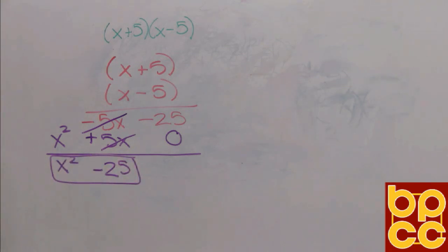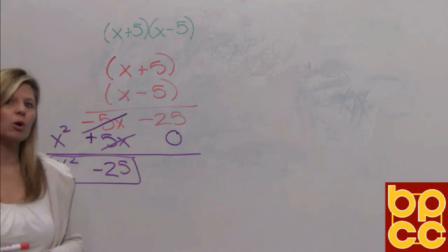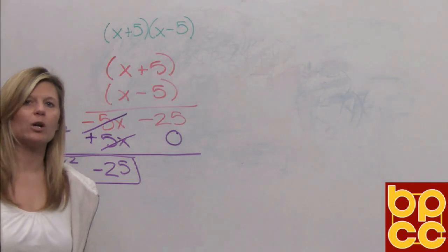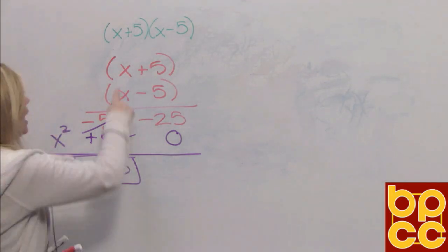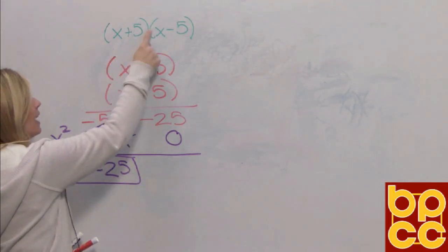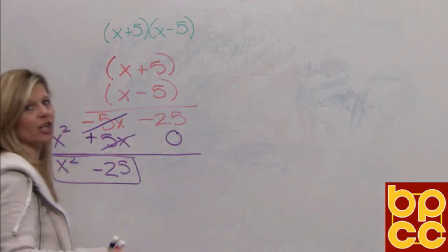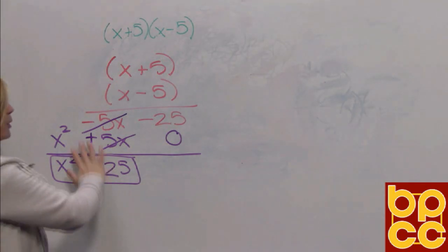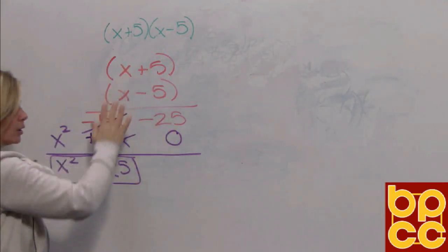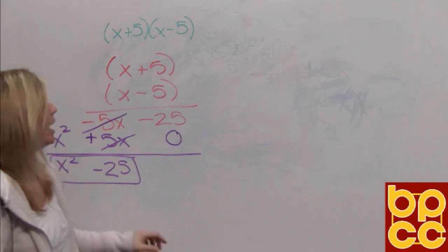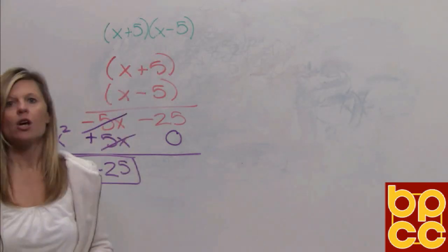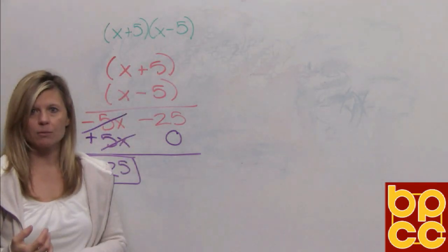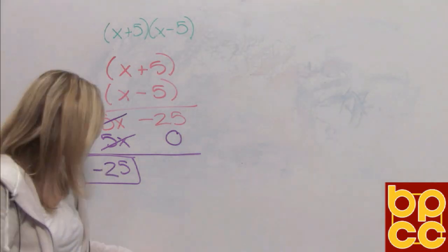And then we'll bring down our constant negative 25. So what you'll notice is these middle terms cancelled out. The reason why that happened is you just didn't multiply any binomial. You multiplied what we call conjugates. x plus 5, x minus 5 are conjugates. We just changed that middle symbol. So, instead of doing all this work, we can do a shortcut. And the shortcut is to multiply conjugates, you multiply the first and the last. What does that mean?